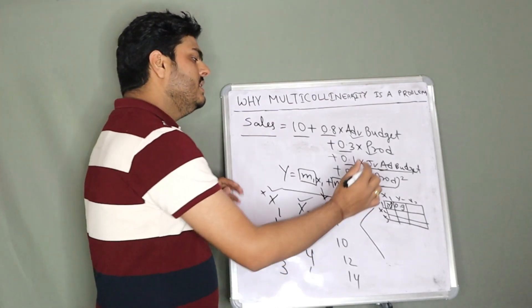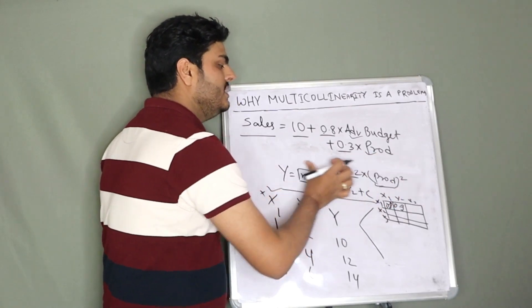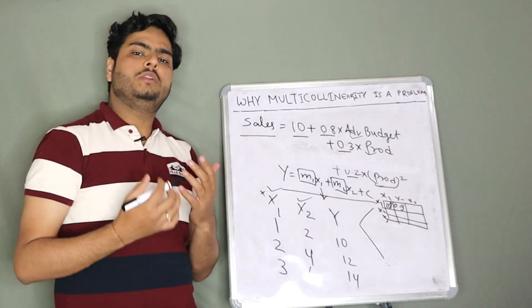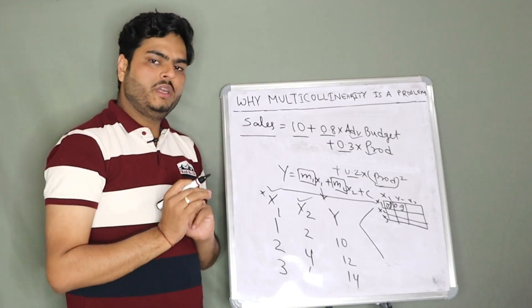Then you can put a threshold saying anything above 0.9, remove one of the variables. For example, in this case, I can remove this ad budget variable completely from my analysis because my correlation value will be high. That is one way when you have limited number of variables in your data.